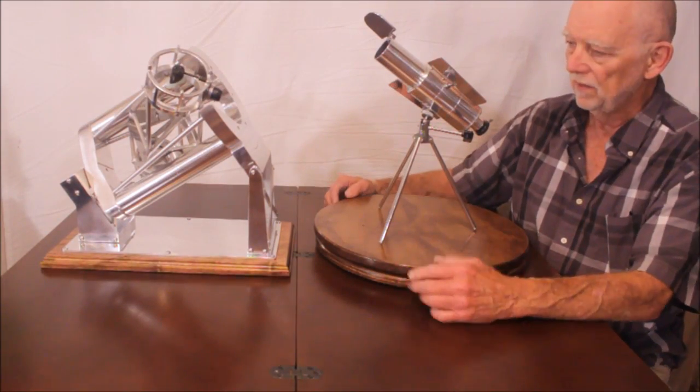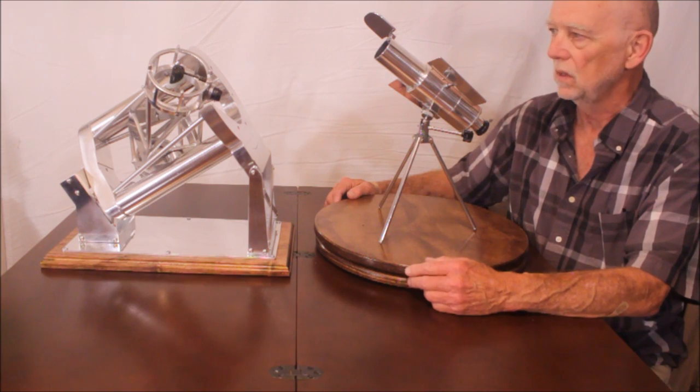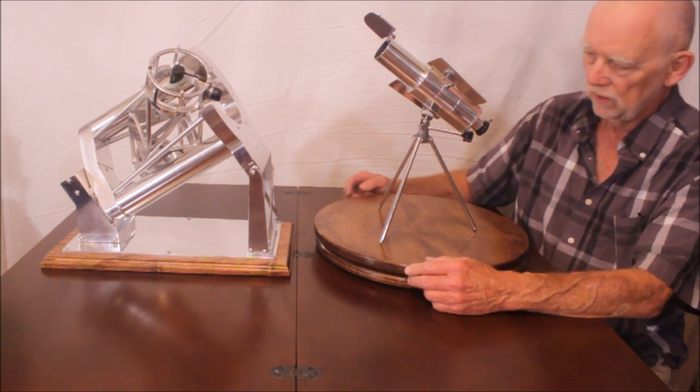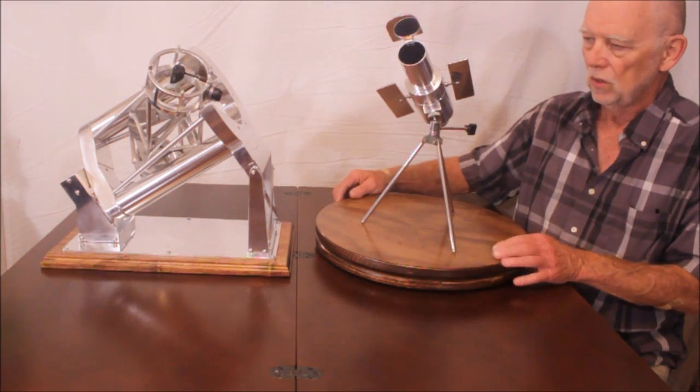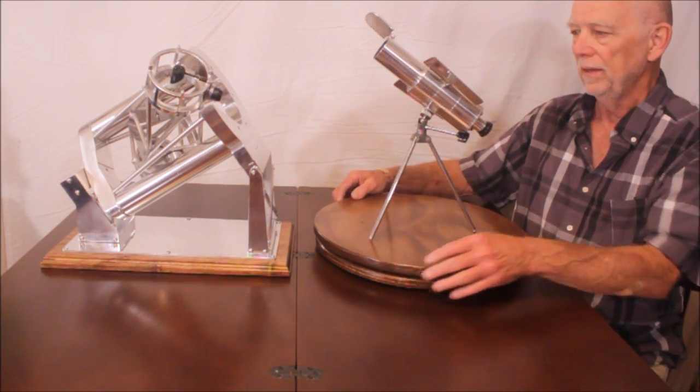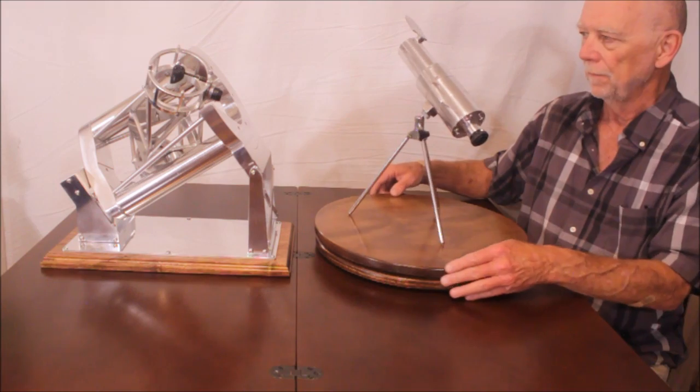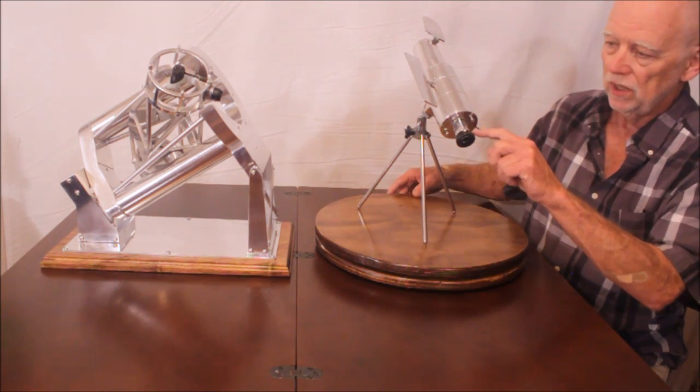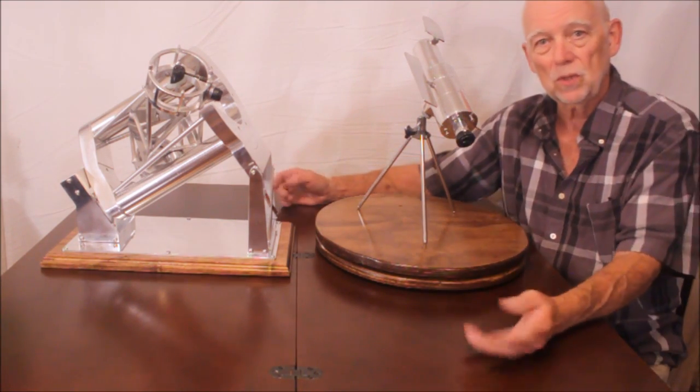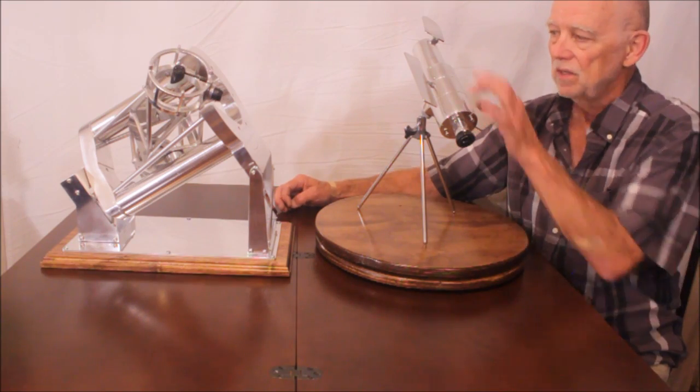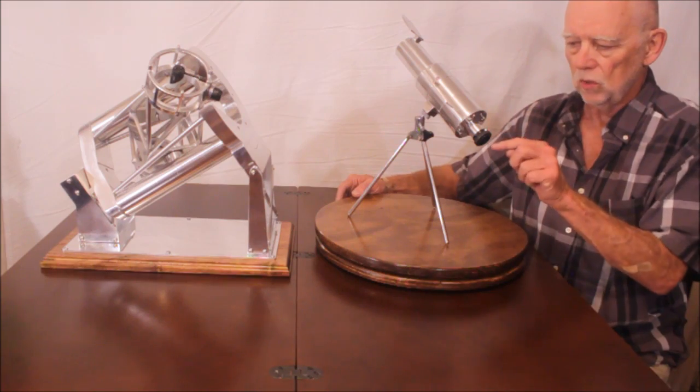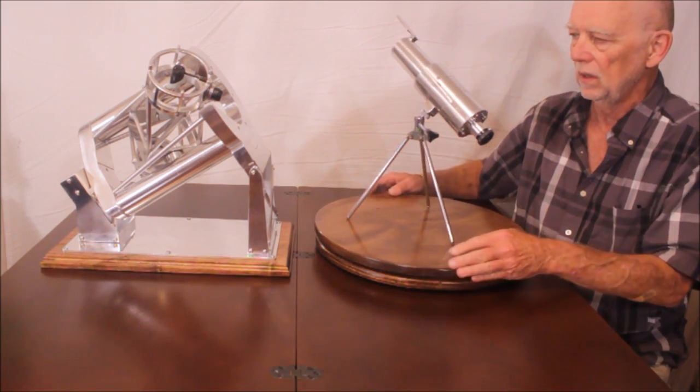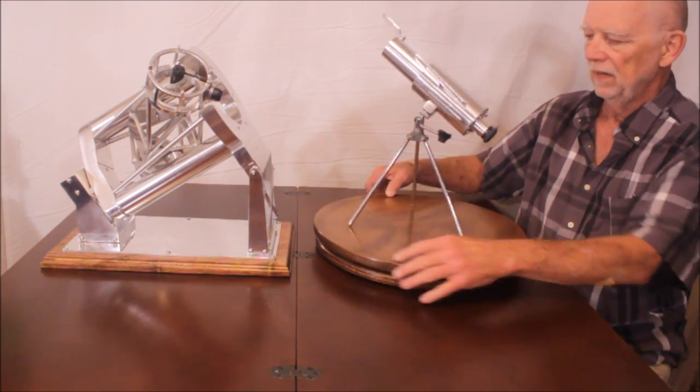While I was at it, I thought I'm making 1:64th scale models, why not do the Hubble Space Telescope? So this is a model that I made of the Hubble Space Telescope. Now you can see something really strange here. That's because my telescopes are functional telescopes and this actually has a little tiny Maksutov in it. So it's a functioning telescope and this is where the eyepiece goes. There's a star diagonal there.